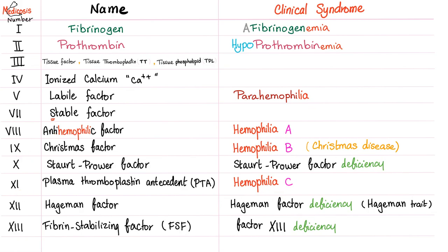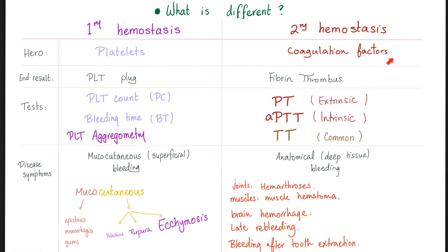Hemophilia A factor is called the anti-hemophilic factor, and this is known as classic hemophilia. Hemophilia B is Christmas disease, and the factor is factor IX, or Christmas factor — named because the first patient was Stephen Christmas. Hemophilia C is a problem with factor XI, called plasma thromboplastin antecedent. All hemophilias have problems with secondary hemostasis. Expect a problem with your fibrin thrombus, and PTT will be prolonged since all hemophilias involve the intrinsic pathway. The main symptom is anatomical or deep tissue bleeding: joint hemorrhage (hemarthrosis), muscle hemorrhage (hematoma), brain hemorrhage, late bleeding after tooth extraction or surgery, and retroperitoneal bleeding.